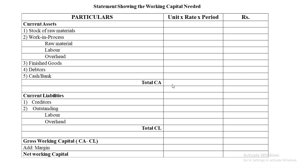Once you get the values, you get the total current assets. Then you note down current liabilities, which has two items: creditors and outstanding (outstanding includes labor and overheads). Subtracting total CL from total CA gives gross working capital. If a margin of safety is given, add it to get net working capital. The formula is: Units × Rate × Period.